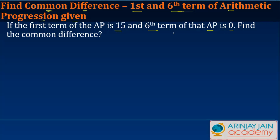Now we know that the first term of an AP, let's call it a1, is given as 15. And the sixth term of the arithmetic progression is given as 0.